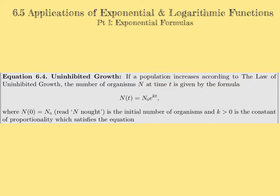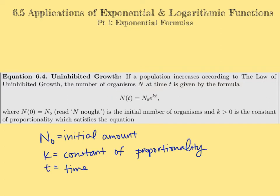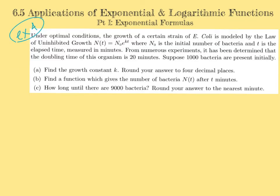Our next formula is about growth. We've graduated from interest formulas and are now headed into growth and decay. Uninhibited growth means you can keep growing forever, not limited by anything. This is the law of uninhibited growth: the number of organisms N at any time T is N sub zero — the initial amount — times E to the KT, where K is the constant of proportionality and K must be greater than zero for growth.